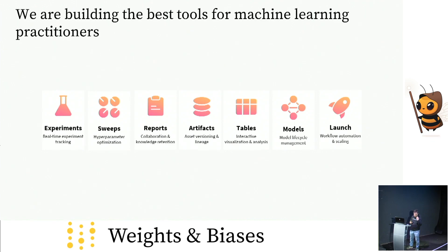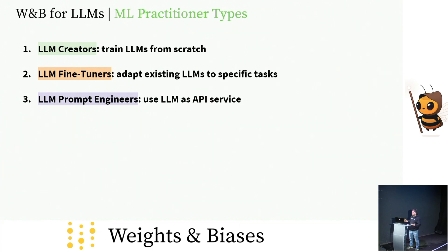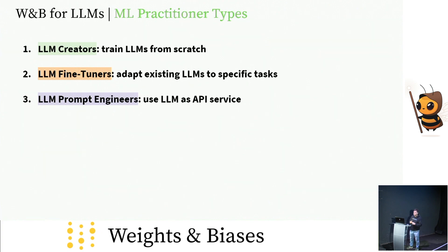Today we're here to talk specifically about LLMs. We think there are sort of three ML practitioner types. The first is large language model creators — folks training LLMs from scratch. The second is the LLM fine-tuners, who take existing models and add a little more data. And then finally, the LLM prompt engineers who use LLMs as an API or service and figure out how to interact with that LLM to make something useful happen. These days, a prompt engineer could be almost anyone.